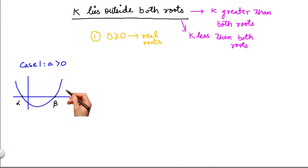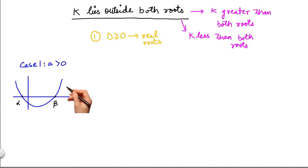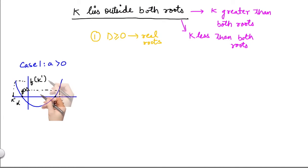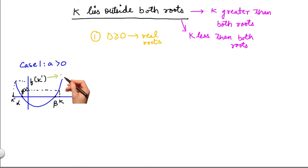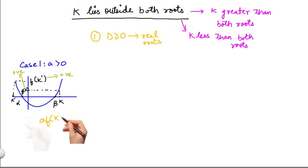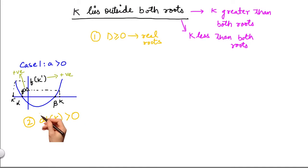We can notice that in both scenarios — whether k is greater than both roots or less than both roots — a into f(k) is always greater than 0. Since a is greater than 0 and f(k) is greater than 0, we get one of our conditions: a into f(k) should be greater than 0. And our first condition was that D should be greater than or equal to 0.